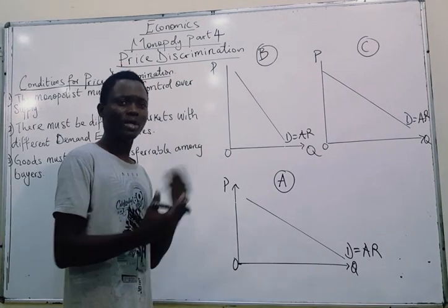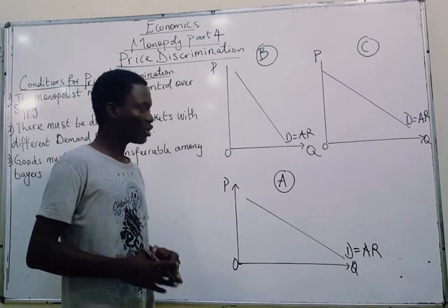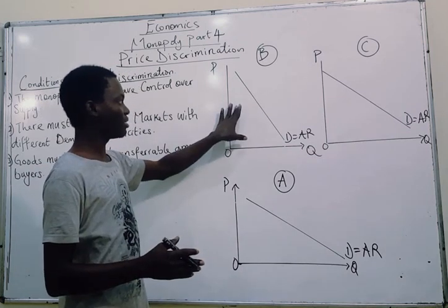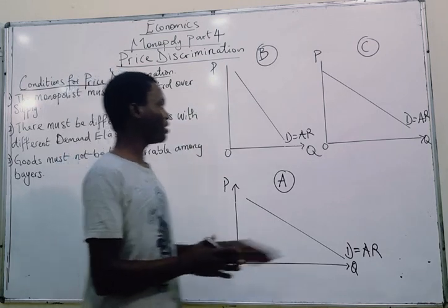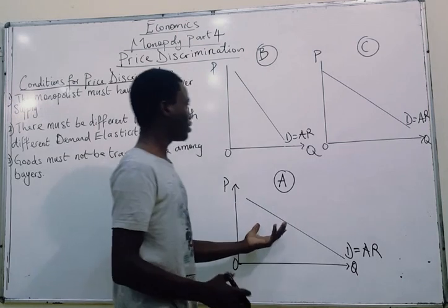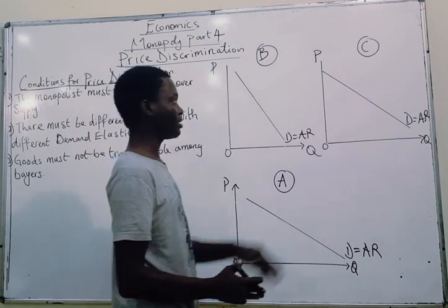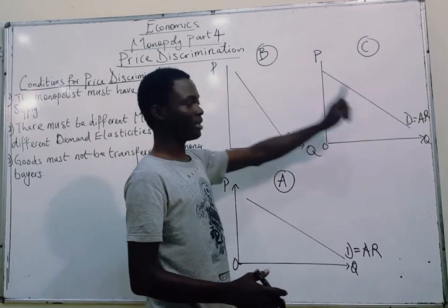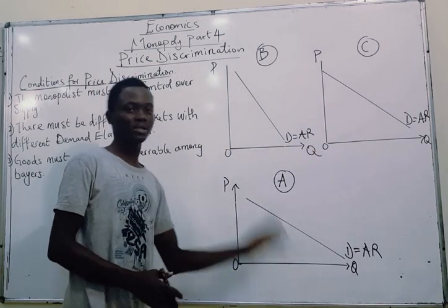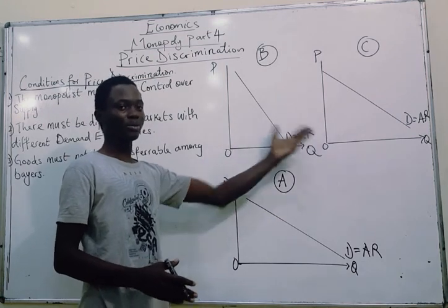The monopolist believes some people can pay more for the good being supplied. So the monopoly divides the market into two: one market with an inelastic demand curve and another market with an elastic demand curve. It is the sum of these two separate markets that gives us the combined total market demand.